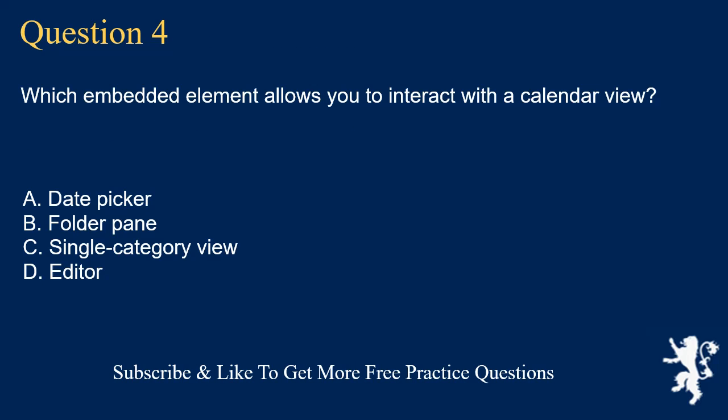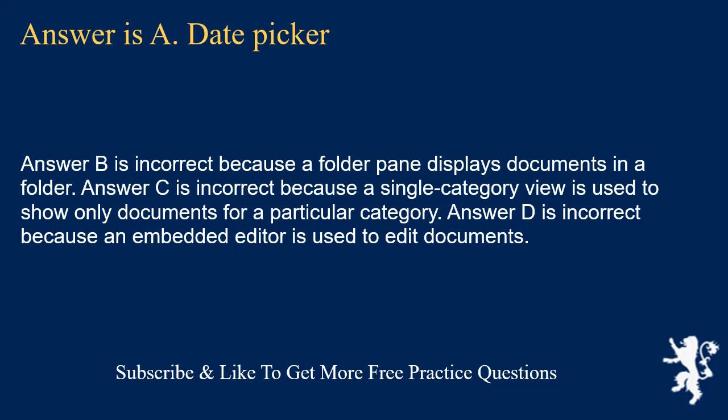Question 4. Which embedded element allows you to interact with a calendar view? Date picker. Folder pane. Single category view. Editor. Answer is A: Date picker. Answer B is incorrect because a folder pane displays documents in a folder. Answer C is incorrect because a single category view is used to show only documents for a particular category. Answer D is incorrect because an embedded editor is used to edit documents.